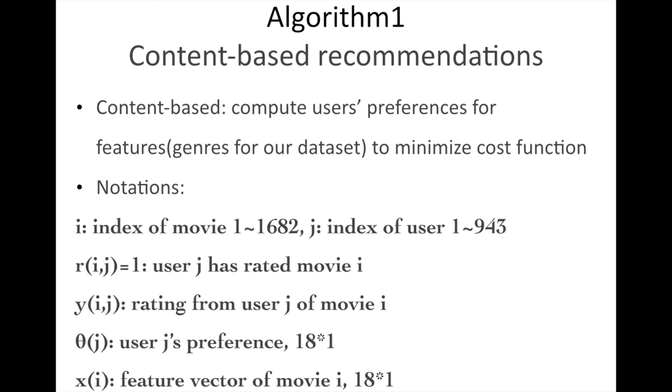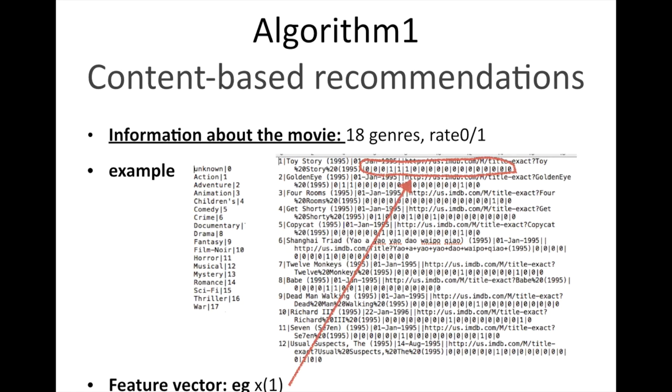We have mentioned that content-based algorithms want to use users' preference for genres. So we should have a feature matrix for the movies to represent the genres of them. Since we've already got some information about the genres in the dataset, we can just use them. For example, the feature vector of the first movie Toy Story is the list of numbers in the red circle. Since we use the information of those movies, we call this algorithm content-based algorithm.